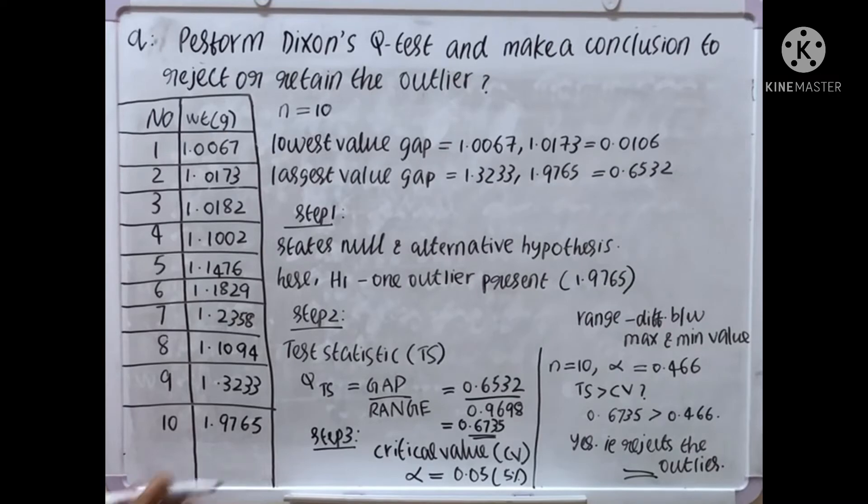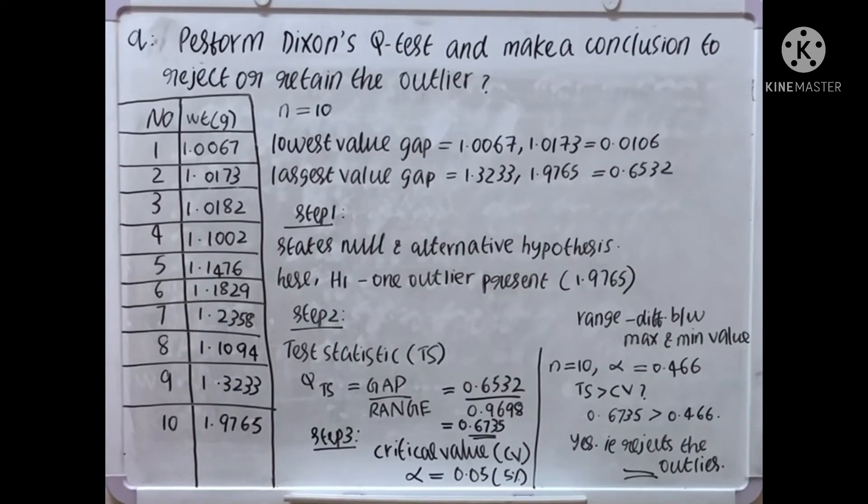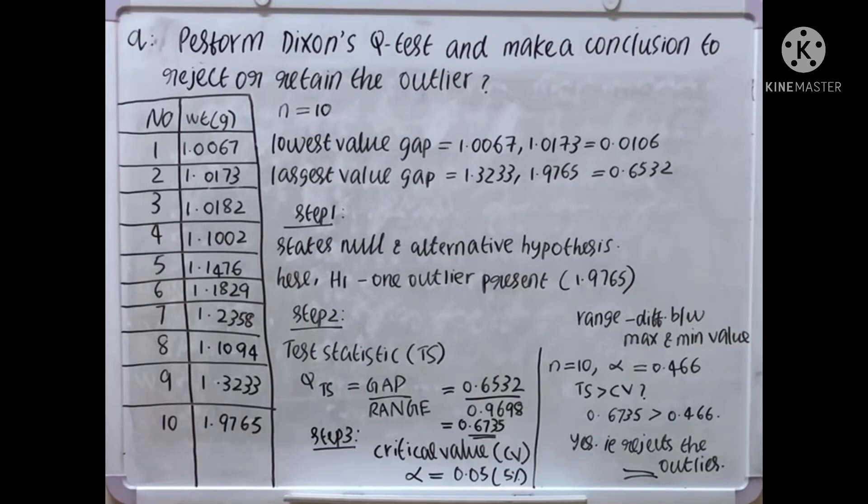Then we get Q subscript TS. Range is the difference between maximum and minimum value difference. Difference of the maximum and minimum value. Maximum value is 1.9765 and the minimum value is 1.0067. So Q subscript TS equal to gap divided by range, which is equal to 0.6735.